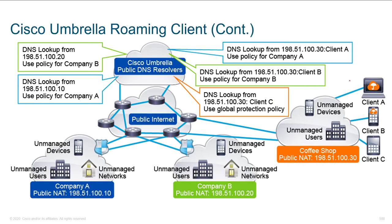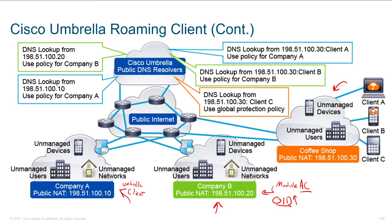The user at the coffee shop doesn't have the agent installed, but the user at Company A has the standalone Umbrella Client, and at Company B we've got somebody that has the module — an add-on for AnyConnect. It still does the same thing: it takes an organizational ID and embeds it in the agent. So whenever you do lookups, we know you're connecting to Umbrella, you're valid, and we can apply a company-specific policy. With the right licensing, we can create content filters — for example, no stock trading from this computer during normal business hours. We can enforce that policy.